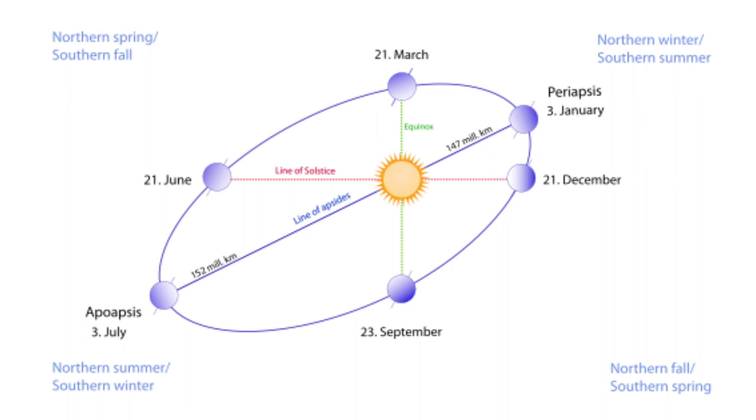But what causes the horizontal movement of the sun? The orbit of earth around the sun is not perfectly circular — it's more of an ellipse. Due to this, the sun appears to move right and left throughout the year.